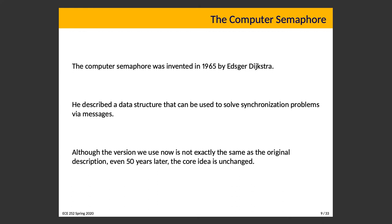The computer semaphore was invented in 1965 by the very famous Dijkstra, a brilliant Dutch computer scientist. Dijkstra described a data structure that can be used to solve synchronization problems via messages, and although the version we use now is not exactly the same as the original description — even 55+ years later — the core idea is unchanged: signaling used to communicate between different threads or processes, tremendously useful in solving all synchronization problems.